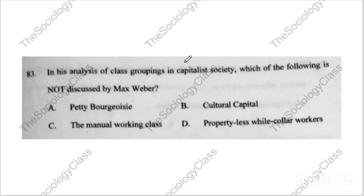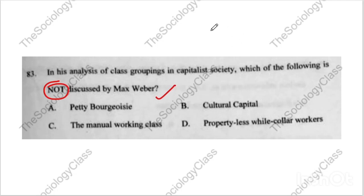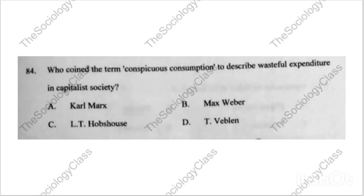Question number eighty-three: 'In his analysis of class groupings in capitalist society, which of the following is NOT discussed by Max Weber?' This question remains in doubt and we will cover it in the doubt class.